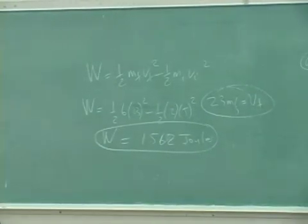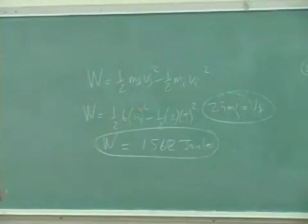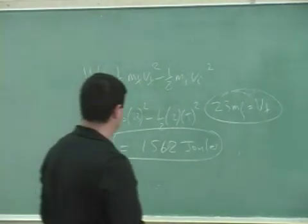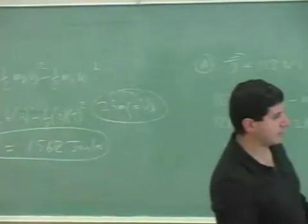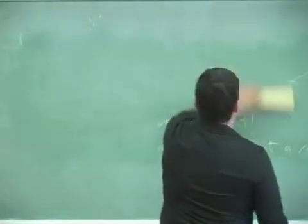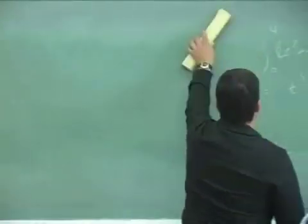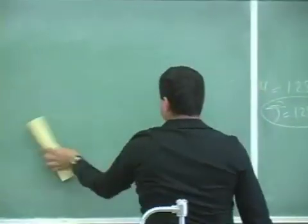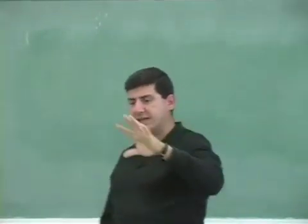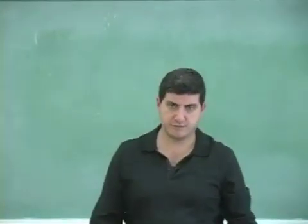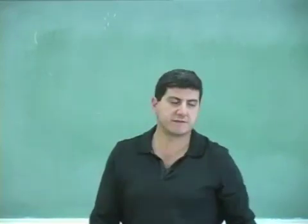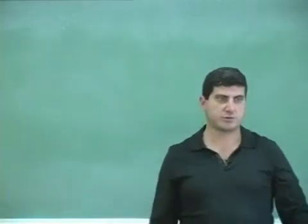1562 joules. So the work done is a ratio of about four. Actually no, about three, about three times the work done. So now you kind of see a little bit of how the impulse is used when the force is variable, when the mass is changing. It's a very powerful tool to find the impulse and then from the impulse you get velocity and then from there you can get to the work.